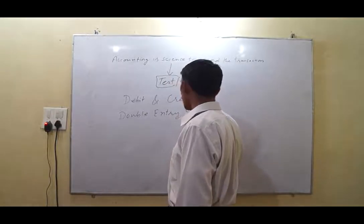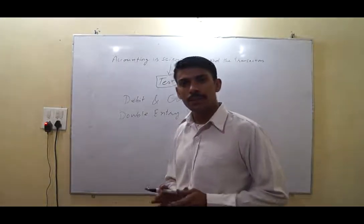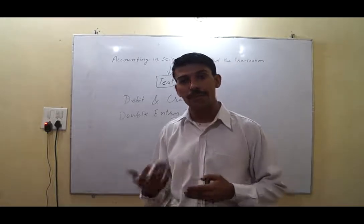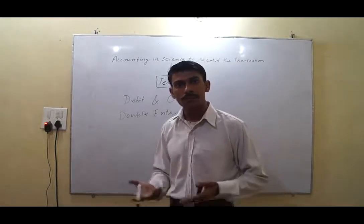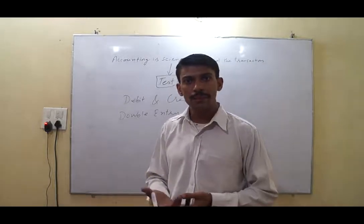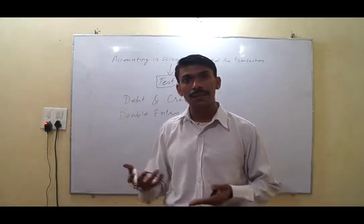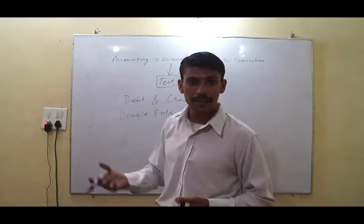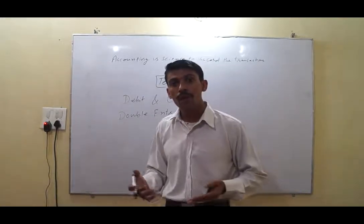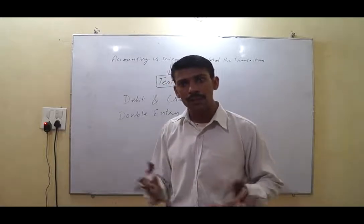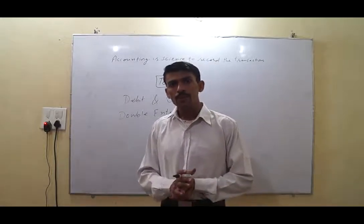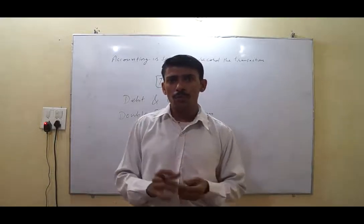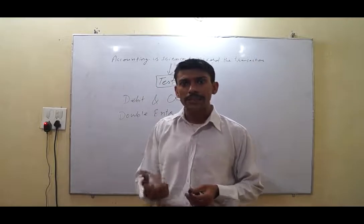On the basis of the double entry system, we record transactions in the journal, then we make the ledger, then we make the trial balance. On these ledger balances and trial balances, we make the financial statements — meaning we have to make a balance sheet and a profit and loss account.